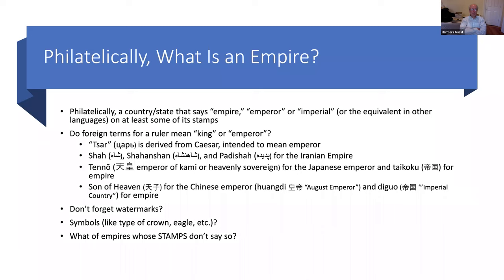There are different terms for emperor or the equivalent. You have 'tsar' from the Russian areas, obviously derived from the word Caesar — the name for the Roman emperors. In Persia you have Shah, Shahanshah, and Padishah. In Japan the emperor is called Tenno and the empire is called Taikoku. In China: the Son of Heaven, or Huangdi — August Emperor — and Di Guo, imperial country. You can look for these characters on stamps even if you don't read Chinese.